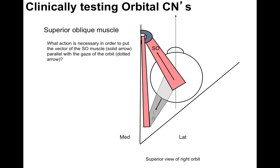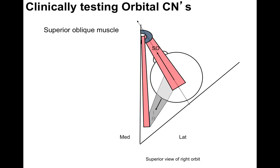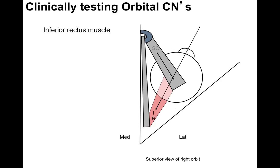The superior oblique muscle is highlighted in pink and the inferior rectus is greyed out. To put the vector of the superior oblique — the solid arrow — parallel with the gaze of the orbit — the dotted arrow — you have to adduct the eye. Now they're in parallel. For the inferior rectus, with the superior oblique greyed out, you abduct the eye to place the gaze of the orbit in parallel with the vector pull of the inferior rectus. Now they're in parallel.